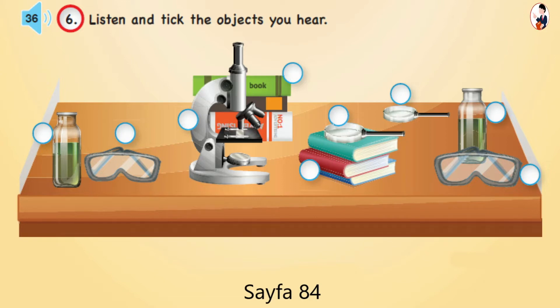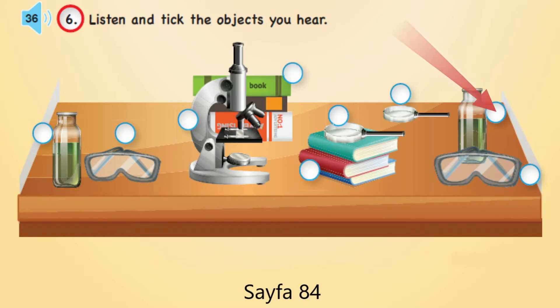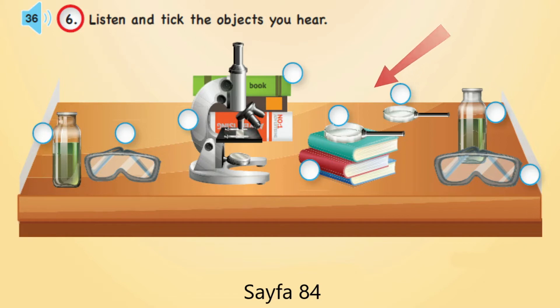Look at the table. Tick the books behind the microscope. Tick the goggles in front of the bottle. Tick the bottle near the goggles. Tick the magnifier on the books.